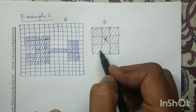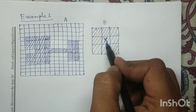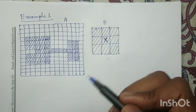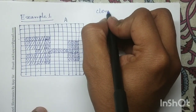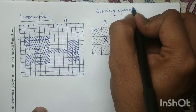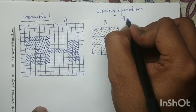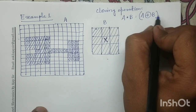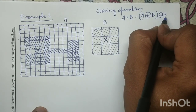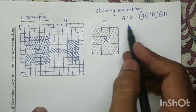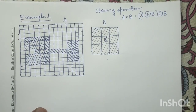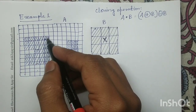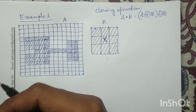Now look at the structuring element B. In the structuring element B, the center pixel value is shaded, which means it is logic 1. In the closing operation, the mathematical expression is A dilation with B followed by erosion with the same structuring element B. First we have to compute the dilation operation, which means we place the center of structuring element B on all object pixels and compute the logical OR operation.